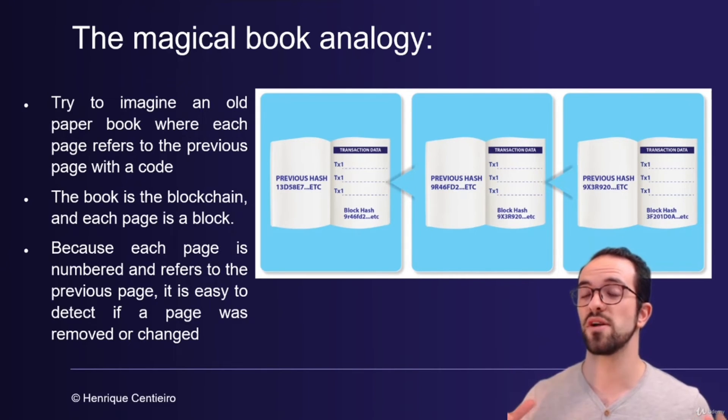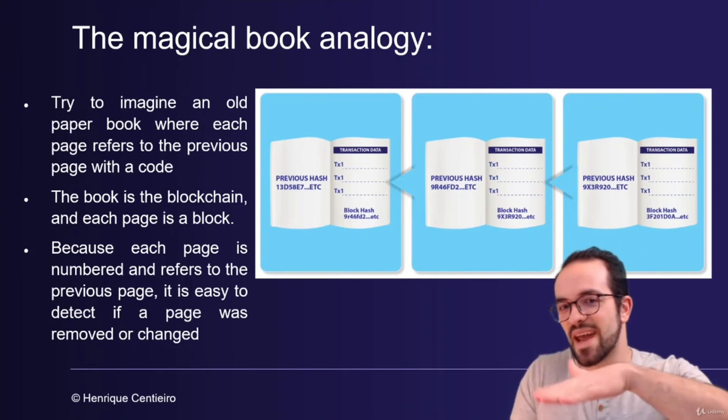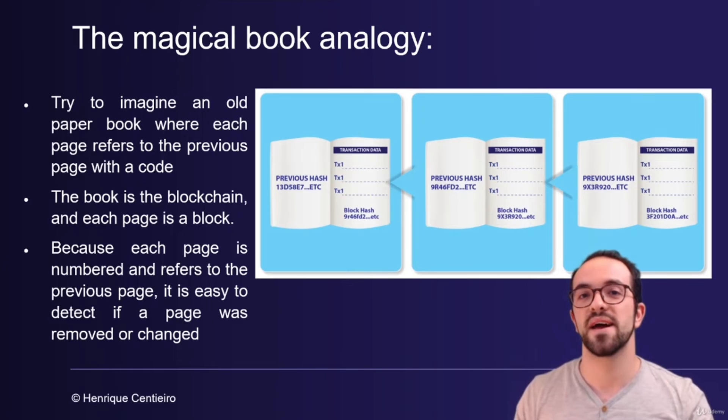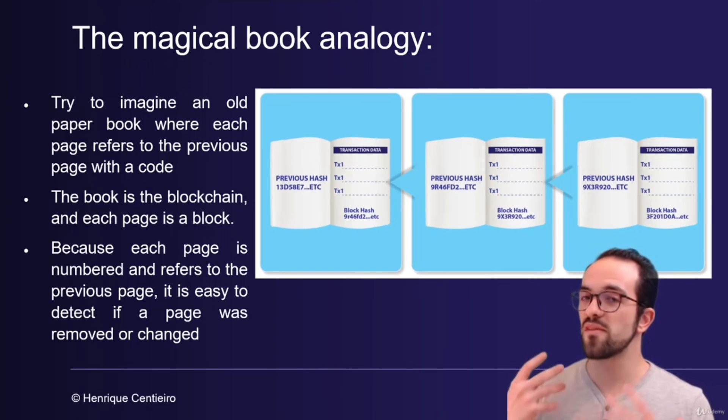Pages are numbered in a way that makes it easy to detect and prevent malicious activity. Blockchains are dealing with billions of dollars and we don't want malicious activity. And since pages are stacked on the top of each other in this kind of book, it's very hard to change previous pages.